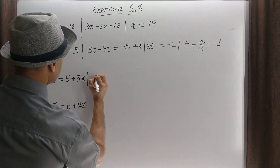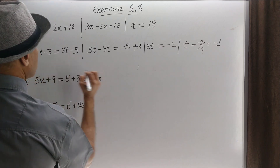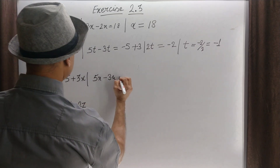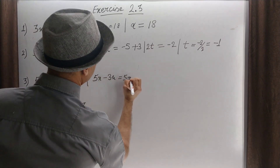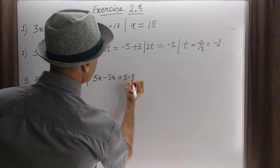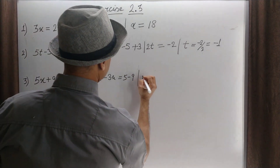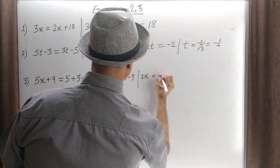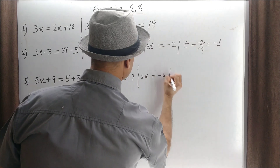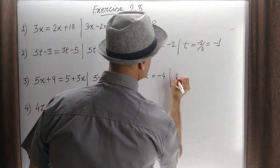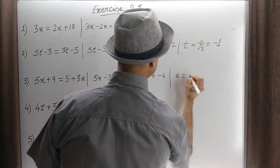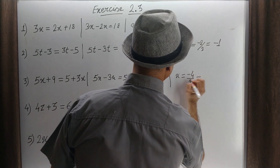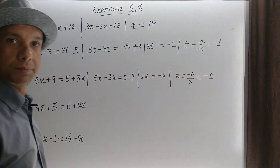This can be written as 5x minus 3x is equal to 5 minus 9. So 2x is equal to minus 4. So x is equal to minus 4 by 2, that is minus 2. Clear?